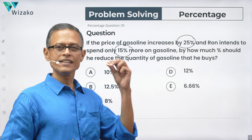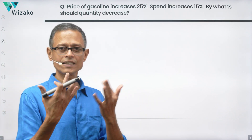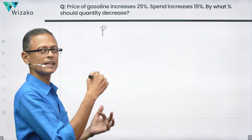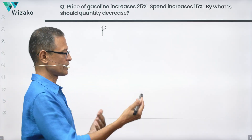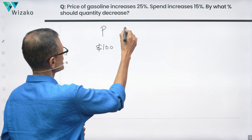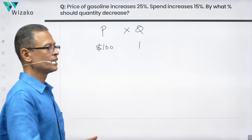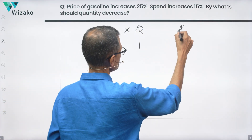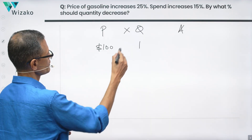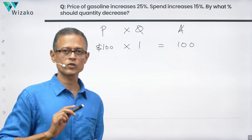The quickest and easiest way of solving this question is basically assigning some numbers. Let's say the price of one unit of gasoline — whatever that unit is — is $100, and let's say the quantity that he is buying is one unit. So the amount that he is going to pay is price times quantity, which is $100.